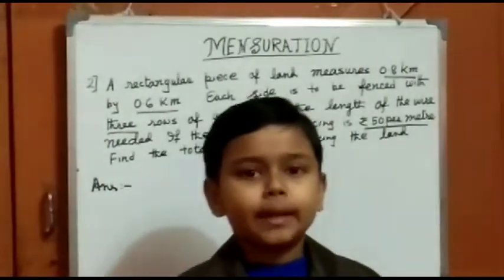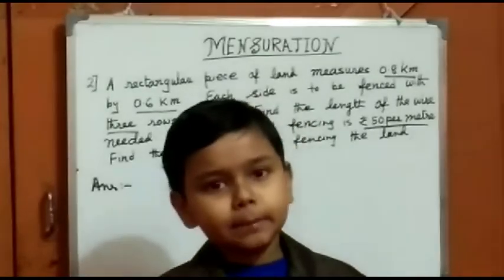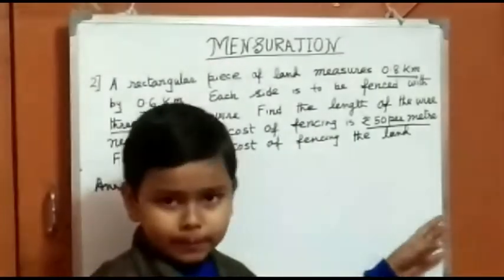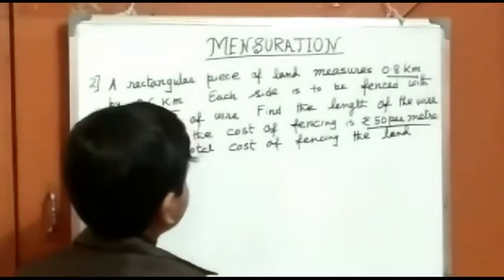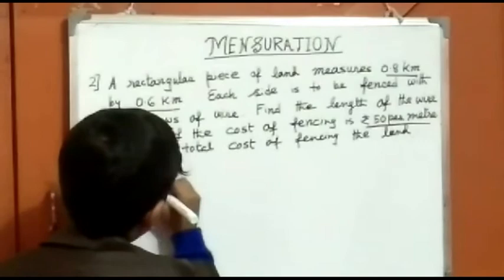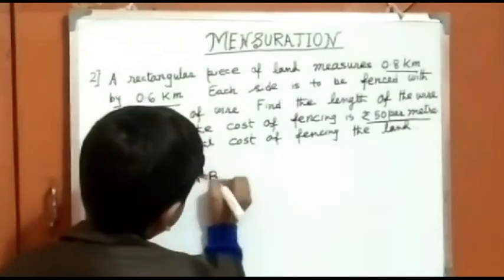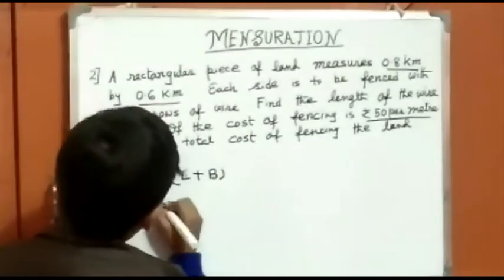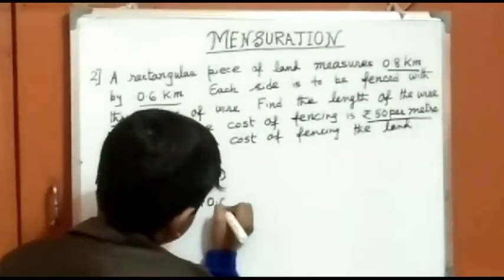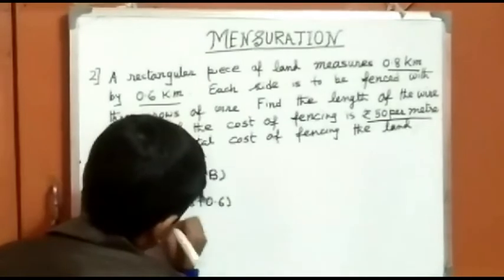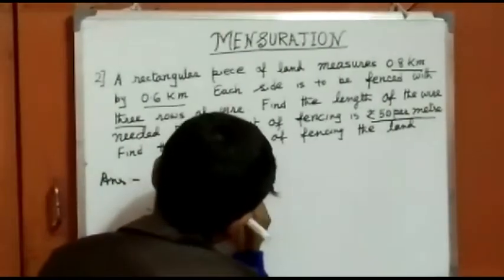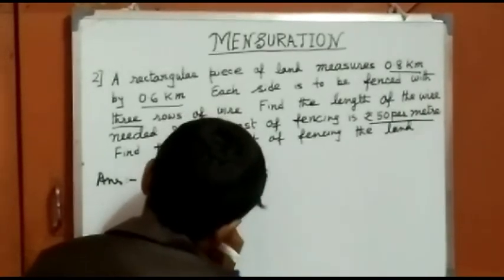So first of all we need to find the perimeter and then multiply it by 3, and then we have to multiply it by 50 per meter. So first of all let's find the area of a rectangle. So we know it is 2 bracket L plus B. So we write 2 bracket 0.8 plus 0.6 which is 2 bracket 1.4 km.